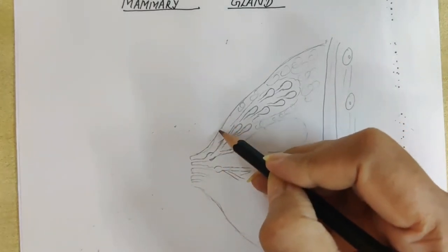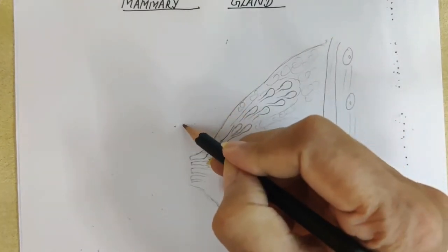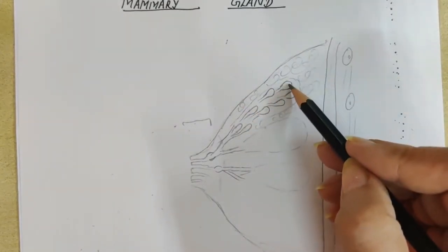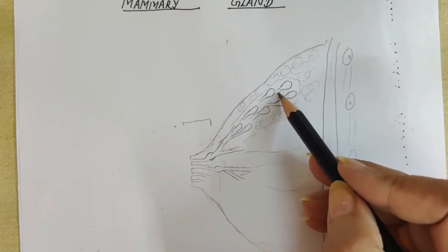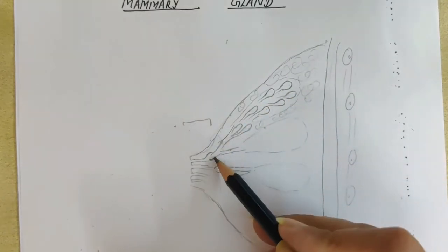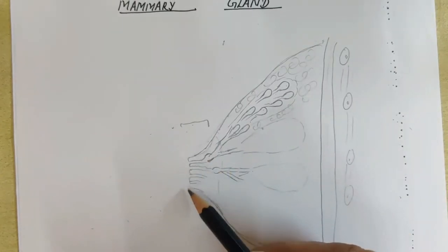This area of the nipple which is slightly brownish is called areola. So once again: the mammary alveoli, mammary tubules, then mammary duct, mammary duct going to the mammary ampulla, and then the lactiferous ducts, and they